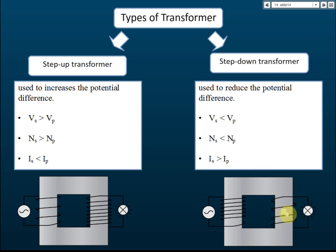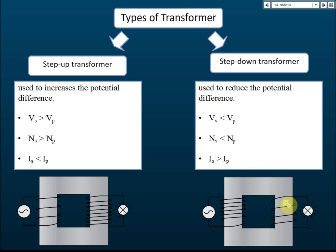In a step-down transformer, the voltage of the secondary coil is lower because step-down means we reduce the voltage. Therefore the number of windings in the secondary coil is less than in the primary coil, but the current increases. So: lower voltage means higher current, and higher voltage means lower current. Those are the two types of transformer you need to know.